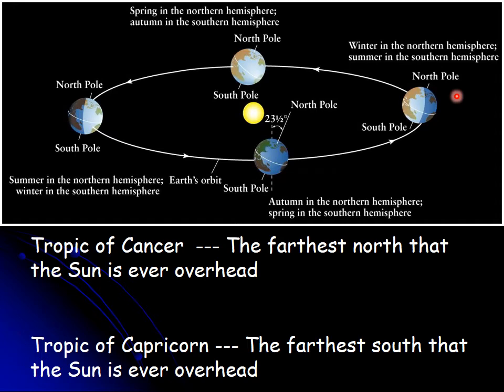Come December and January, the northern hemisphere is in wintertime while the southern hemisphere is in summertime — which is why in Australia and New Zealand, Santa Claus wears a red bathing suit rather than a red parka. The farthest north you can ever be and have the sun directly overhead is 23.5 degrees north — we call that the Tropic of Cancer. The farthest south is 23.5 degrees south — the Tropic of Capricorn.